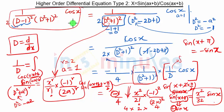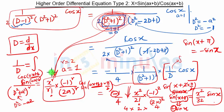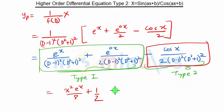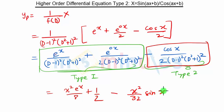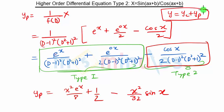When we substitute D² equal to −1 in this equation, this part becomes zero. For the part that becomes zero, the solution is given by that special formula. We also saw that whenever D is in the denominator, it represents integration, and we take the integration of cos x. So the solution is minus sin x replaced, and we found yp = x² / 32 · sin x. The final solution is y = yc + yp.